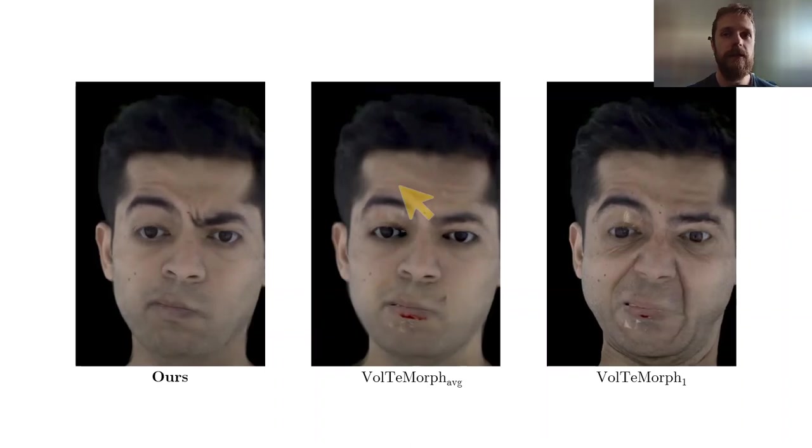Altogether, when we compare our method to Voldemort directly, we can see that BlendFields outperforms Voldemort. Voldemort trained on multiple frames smoothes out the details. When trained on just a single frame, Voldemort renders an unrealistic face as the result.